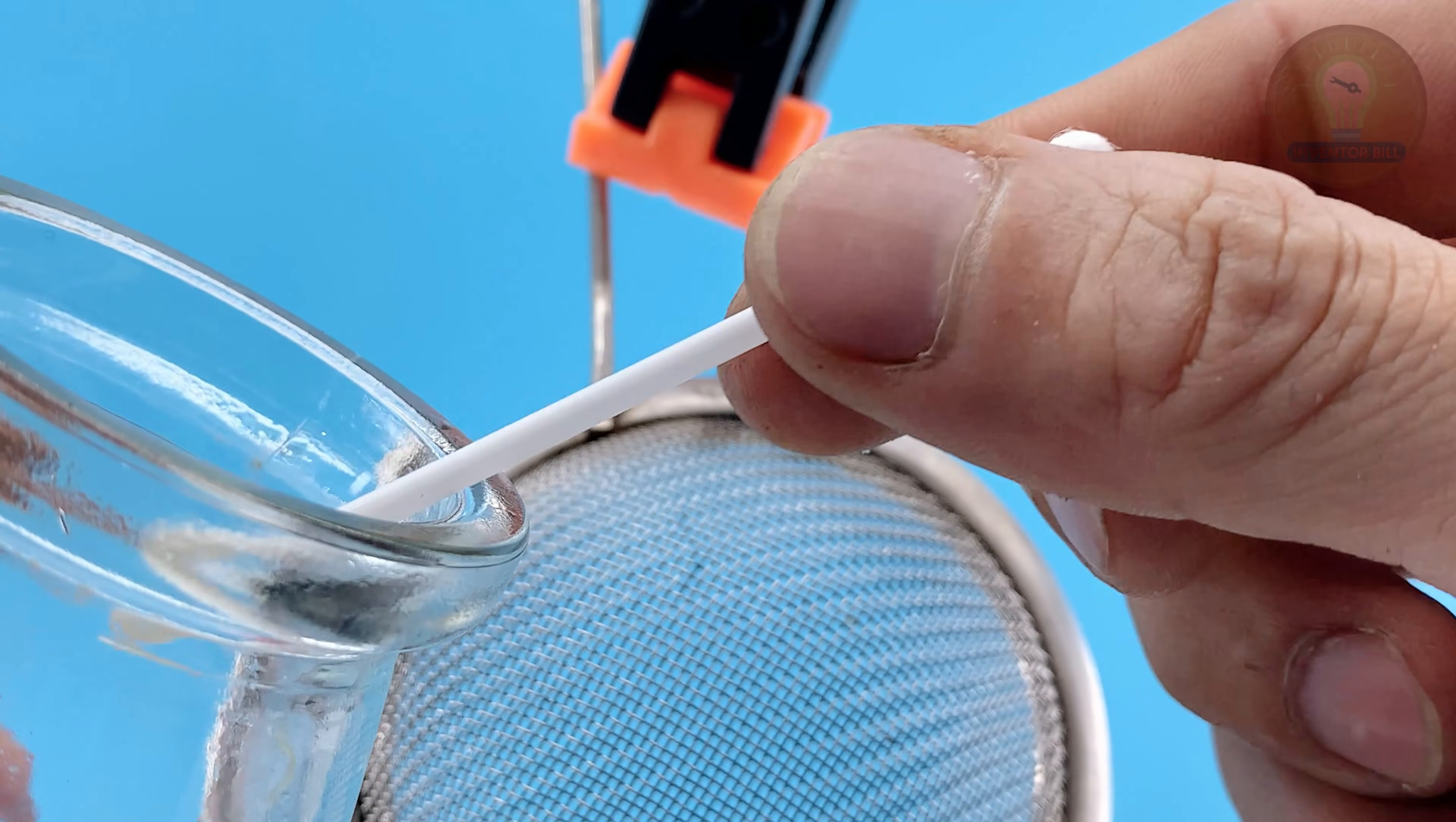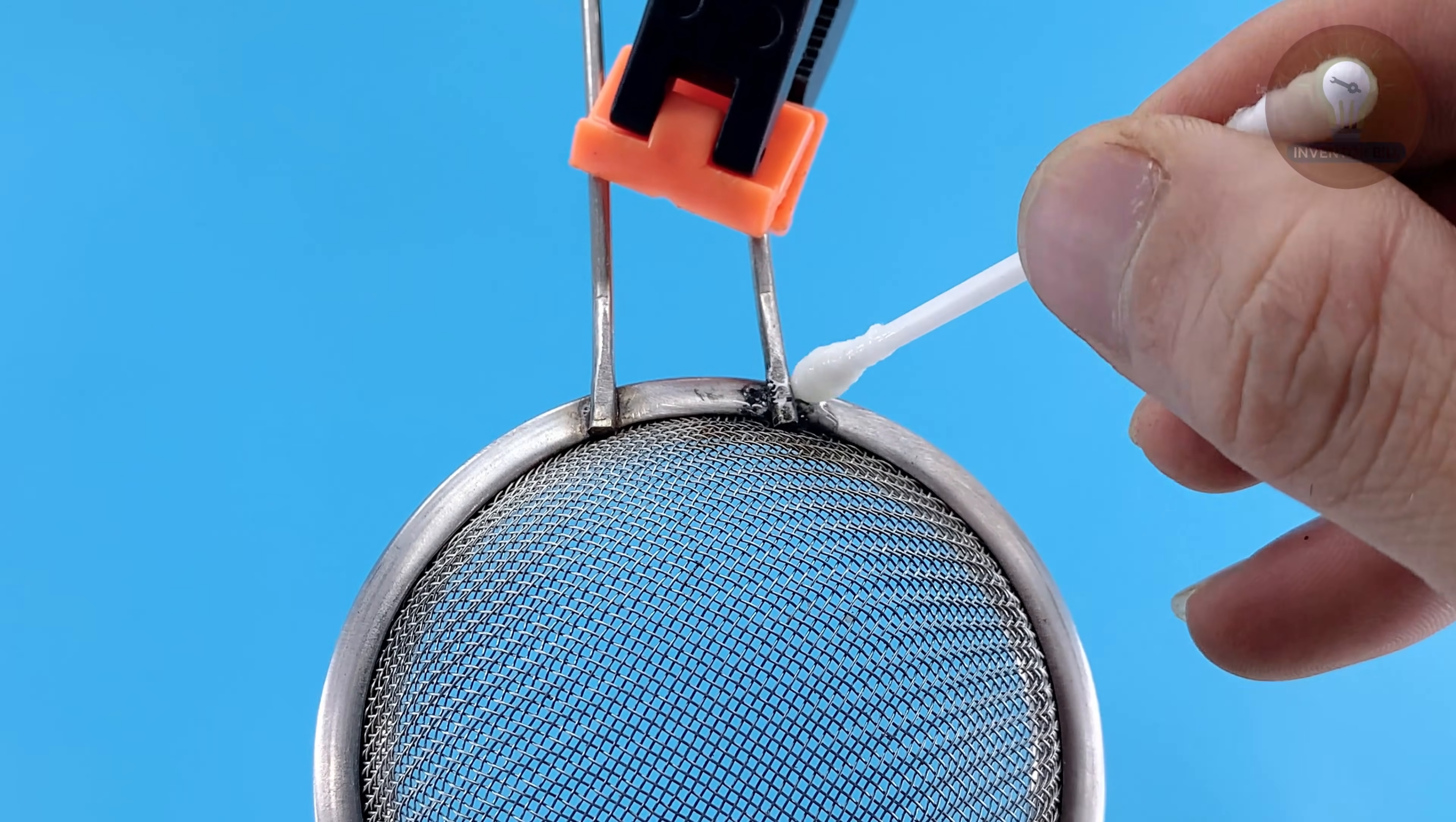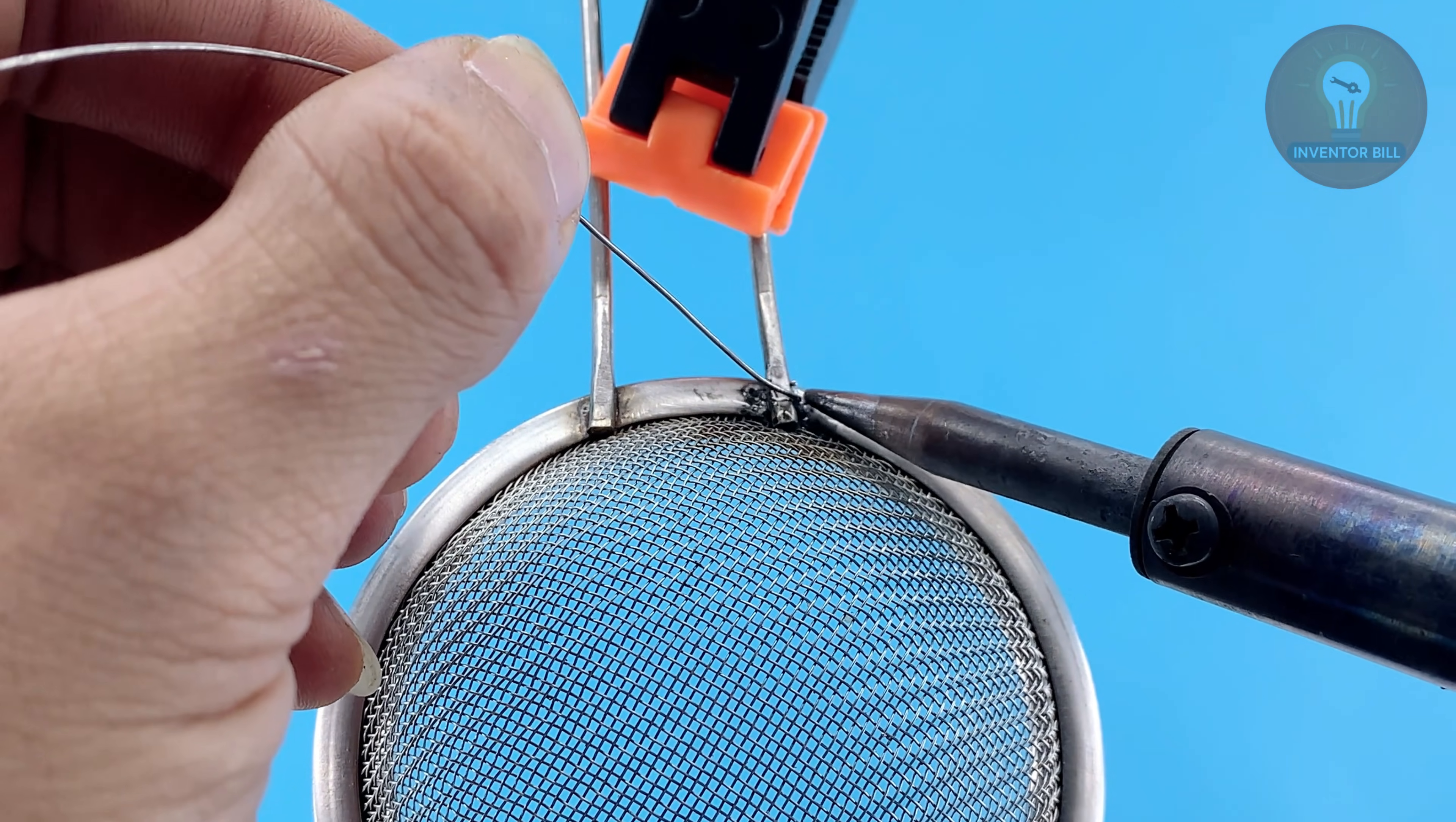This trick works great whenever you need to solder difficult metals like stainless steel or nickel. With a simple mix of lemon, salt, and water, you've just made a powerful natural flux that gets the job done without spending a dime.